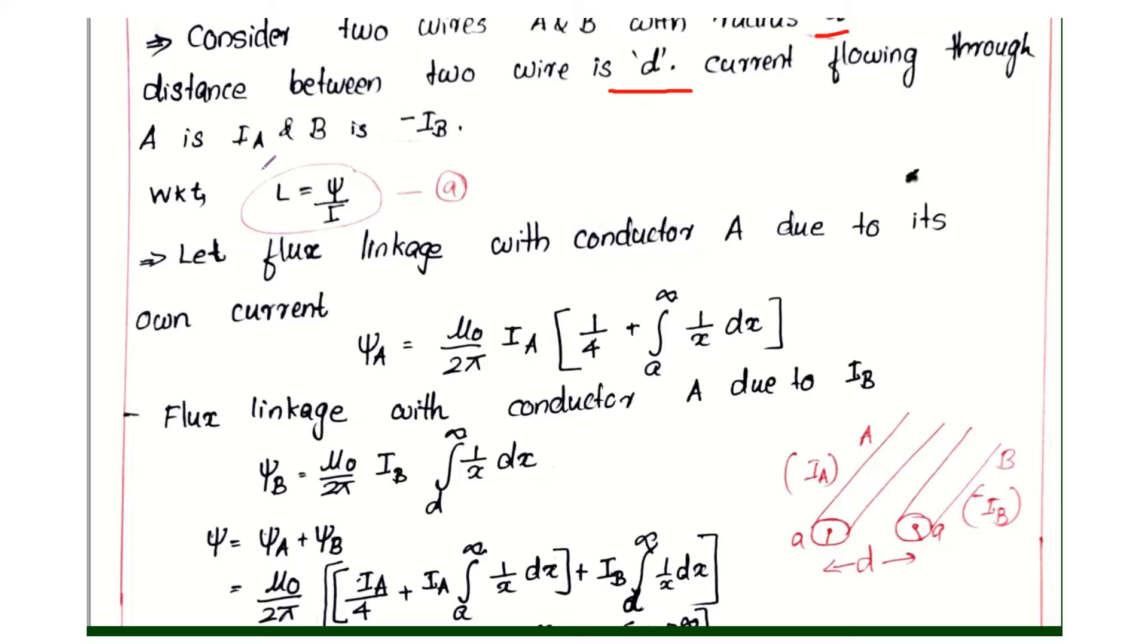The current flowing through A is IA and through B is minus IB. Transmission line A will pass current IA, B will pass current minus IB. IA and IB amount is same but in different direction.